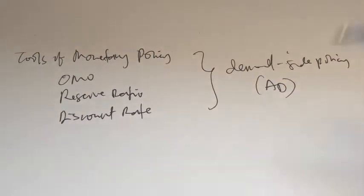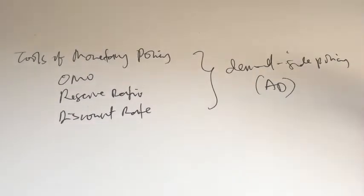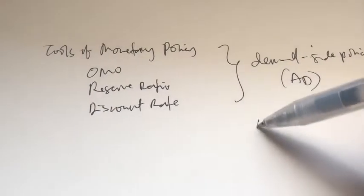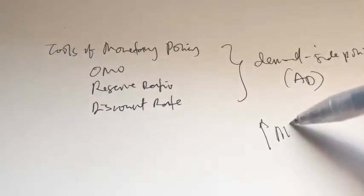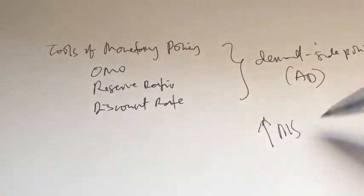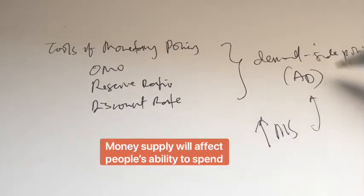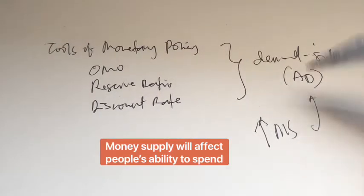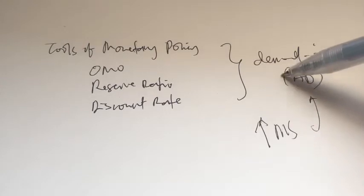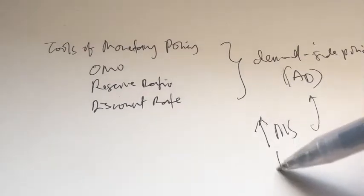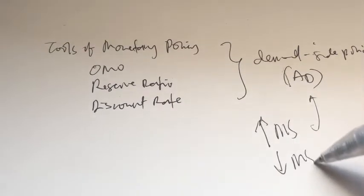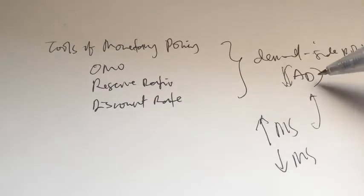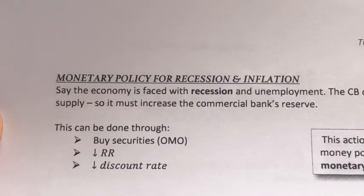How is this related to monetary policy? Whenever money supply increases, it will affect people's ability in total. When money supply increases, it will increase aggregate demand. When money supply falls, it will decrease aggregate demand.